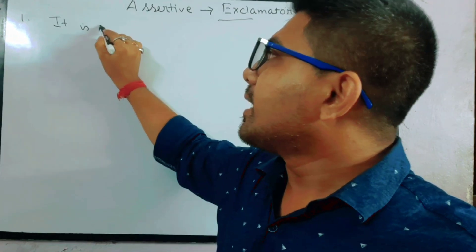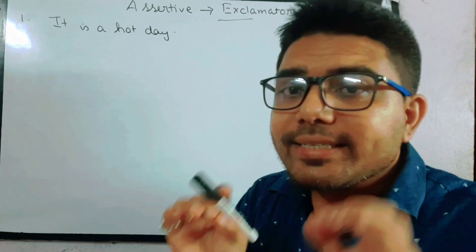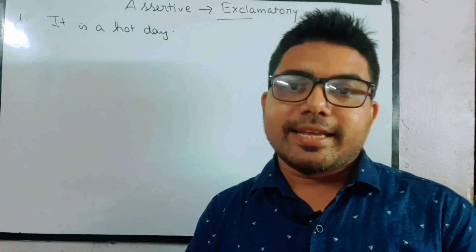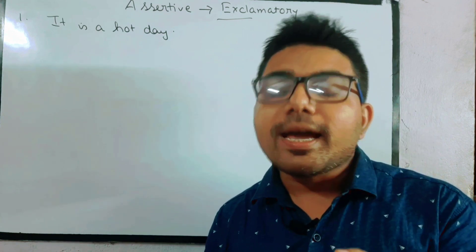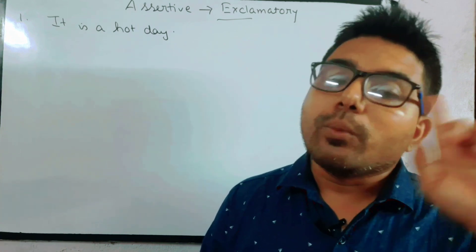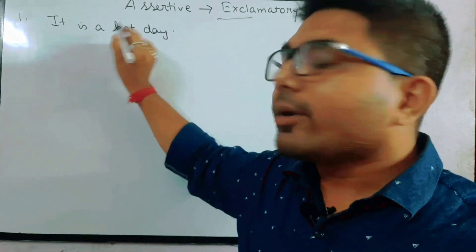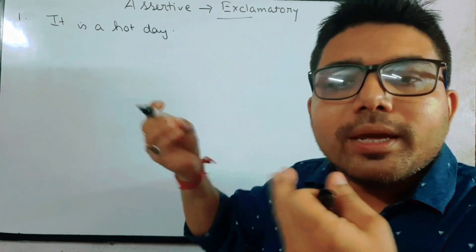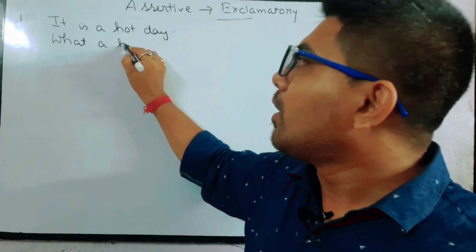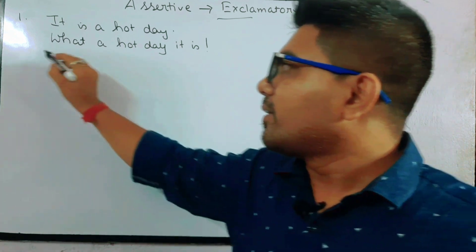Let's learn through examples. For example: 'It is a hot day.' To change this from assertive to exclamatory, we start with either 'What' or 'How.' Here, 'a hot day' — kaisa din, a hot day — is described with an article. So when a noun is described with an article, we use 'What.' So the exclamatory form is: 'What a hot day it is!'